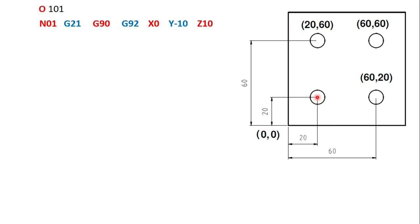Next is G92 — this defines the specific location of the coordinate axis system origin relative to the starting location of the cutting tool. I am defining a point near the workpiece: X0, Y minus 10, and Z10. So Z10 means the tool is 10mm above the workpiece surface at this starting position.